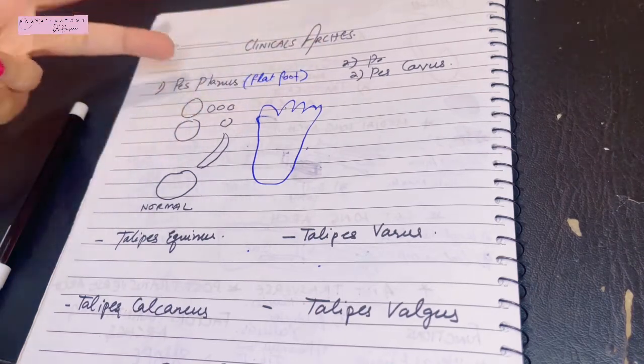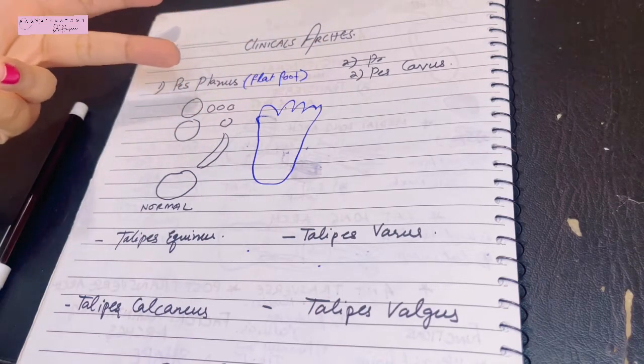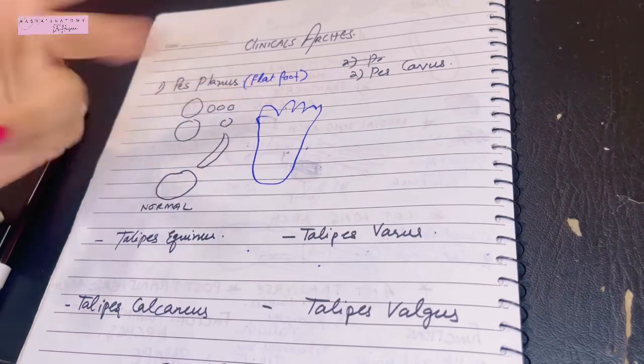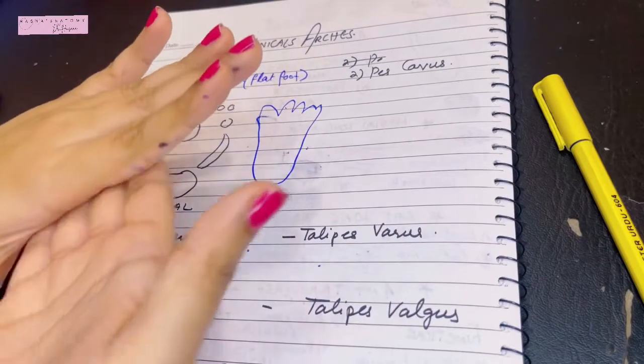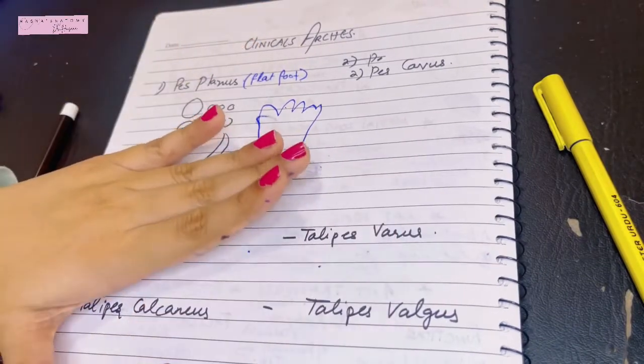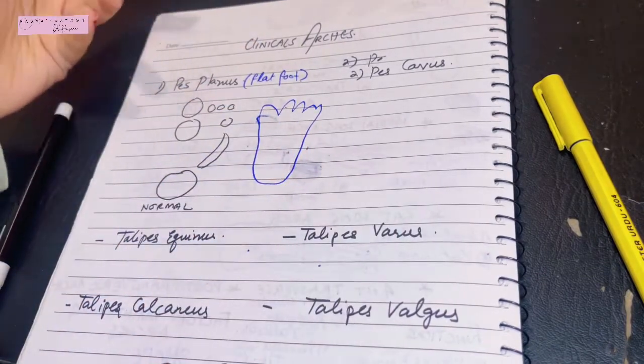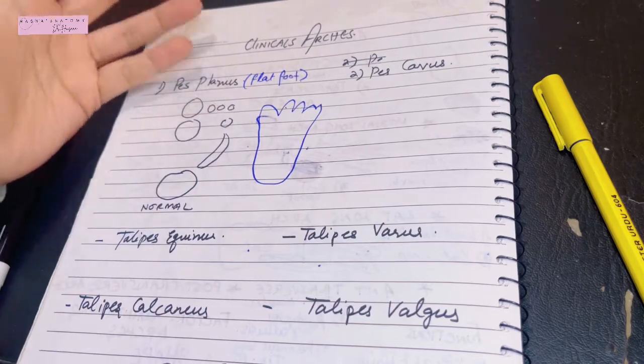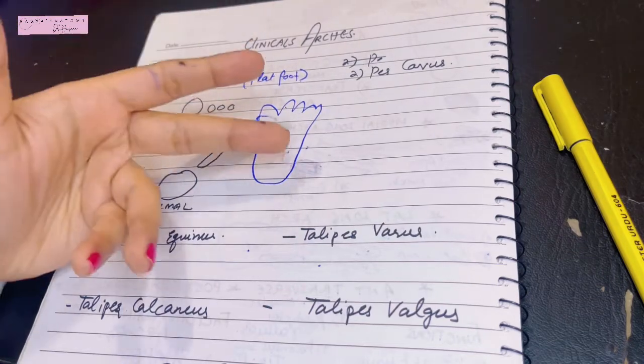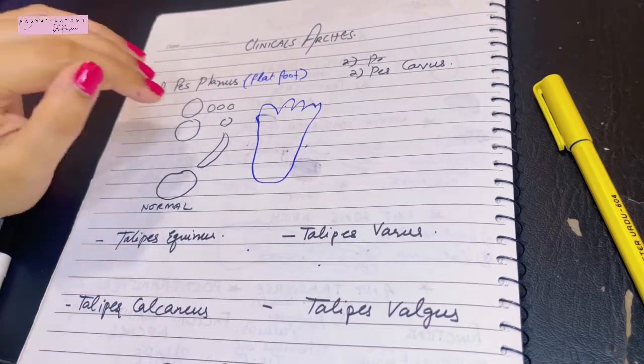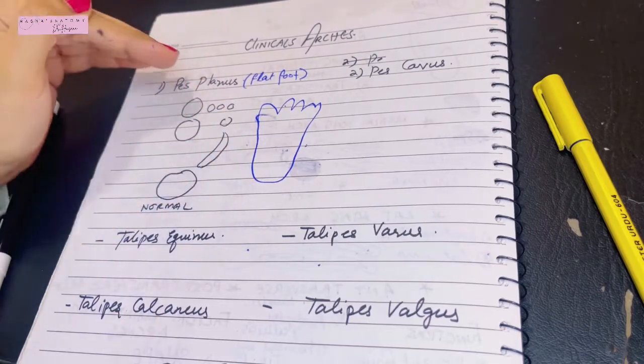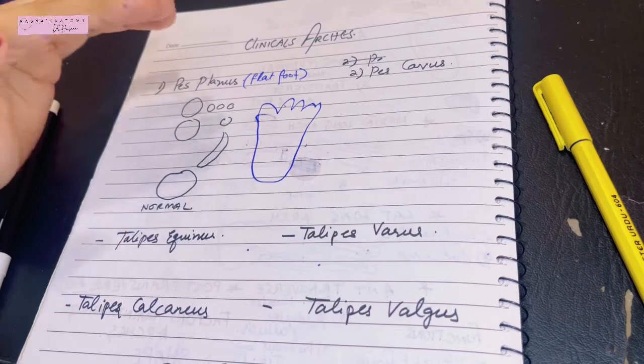The complications of flat foot are that all the functions of the arches of the foot that they were performing will not be performed because now the foot is flat. So there will be compression of the nerve that lies under the sole that will cause metatarsalgia. What is metatarsalgia? Pain in the metatarsal - anything related to algia means pain. So metatarsals will undergo a lot of pain. These people will complain of pain and the way they will walk, they will walk in a shuffling gait.